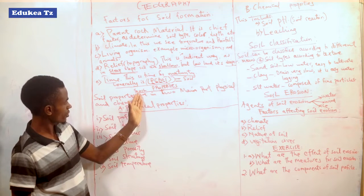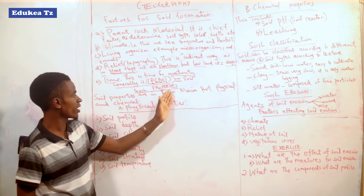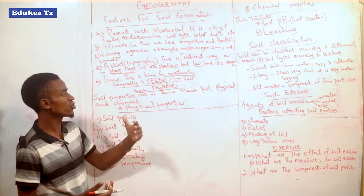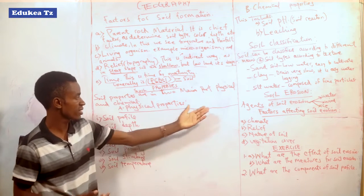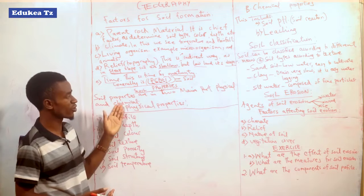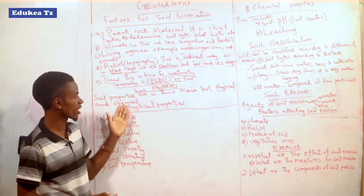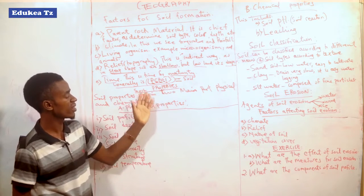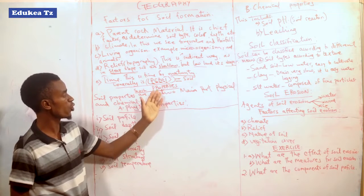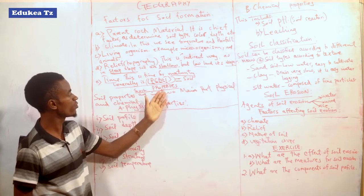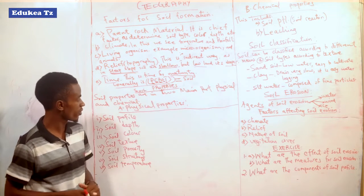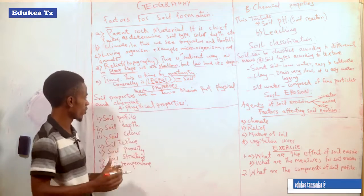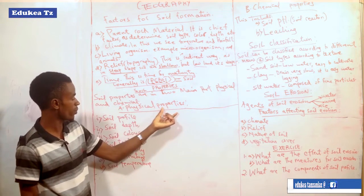Another part is soil properties. Soil properties are in two parts: there are physical properties and chemical properties. Soil properties means the things which make the soil, or the features of the soil. The features of the soil are classified as physical and chemical. Let's start with the physical properties.